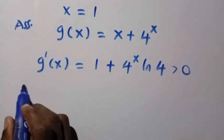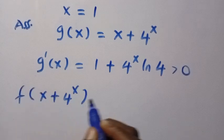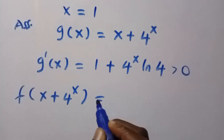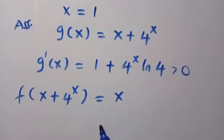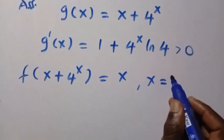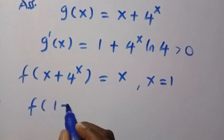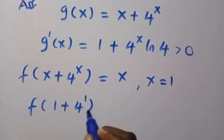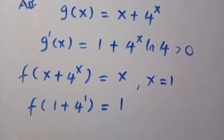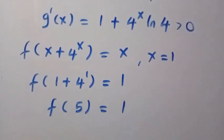To get f(5) from here, we are going to let our x here equal 1. If x equals 1, then we have f(1 + 4^1) = 1, showing that f(5) = 1.